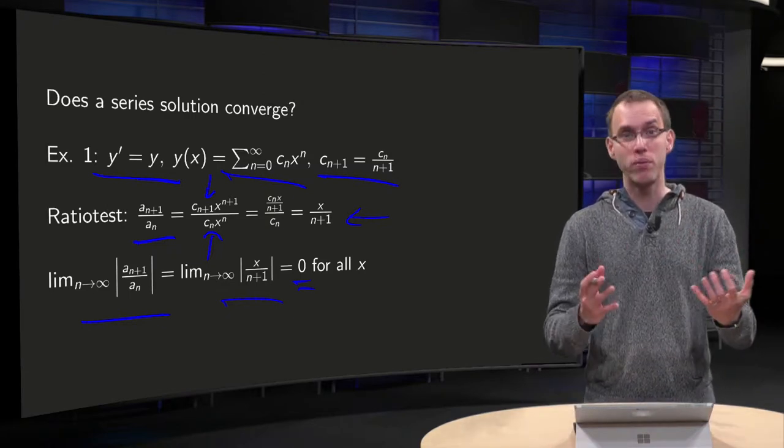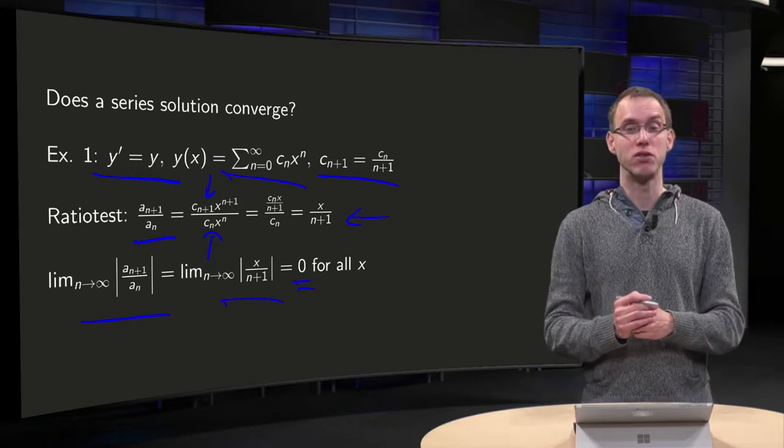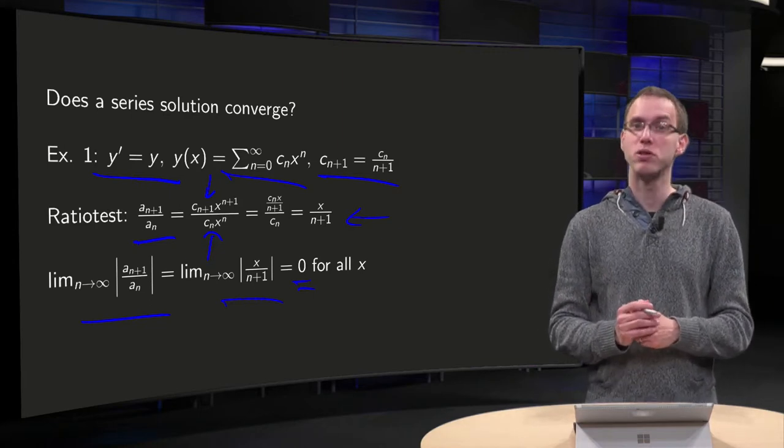So that means that this limit equals 0 for all values of x, which means that this is smaller than 1, which means that our power series converges for all values of x.